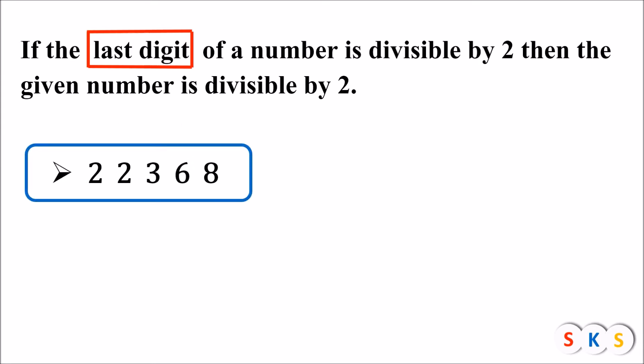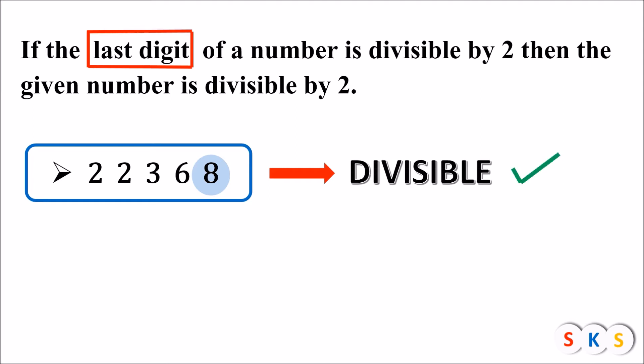Is this number divisible by 2? To know whether this number is divisible by 2 or not, we need to see the last digit of this number. Can you find the last digit of this number? It is 8. Is 8 divisible by 2? Yes, 8 is divisible by 2 because 4 times 2 is 8. So, if the last digit of a number is divisible by 2, then the number is divisible by 2. Hence, the given number is divisible by 2.